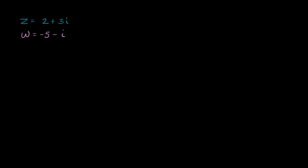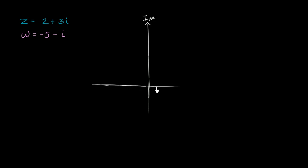Let's first try to plot these on the complex plane. Right over here, let me draw our imaginary axis and over here our real axis. We're going to go as high as positive 2 in the real direction and as low as negative 5 along the real axis.